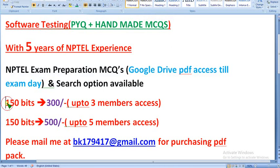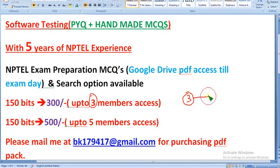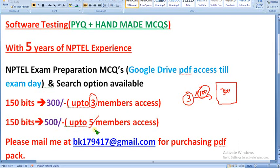You will get a total of 150 MCQs and the price is 300 rupees only. You get access for up to three members — not just one person. If you gather at least three members, each person pays just 100 rupees to get the PDF access for 300. If you are five members, you can get access for 500 rupees, which is still 100 rupees per person.